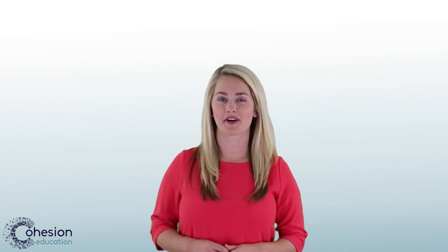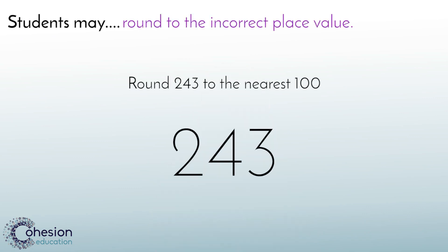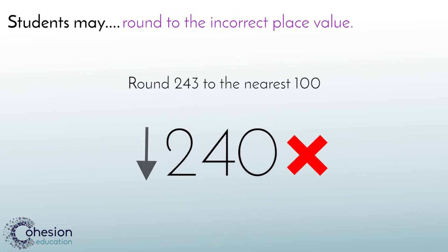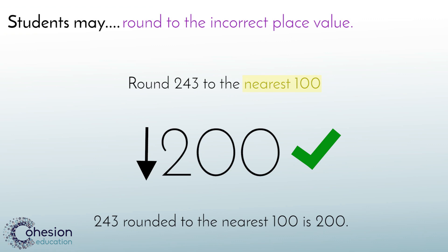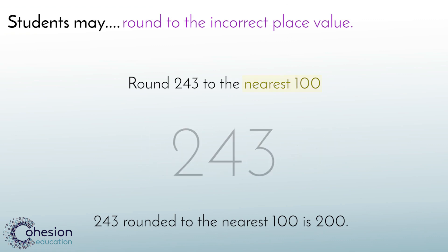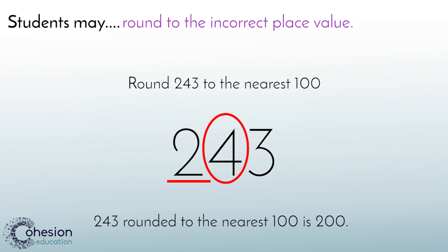Students may make mistakes due to not rounding to the correct place value. For example, rounding 243 to 240 instead of rounding down to 200 when asked to round to the nearest hundred. Reiterate to students the process of underlining the place value being rounded and circling the number to the right, while identifying if the number should be rounded up or stay the same.